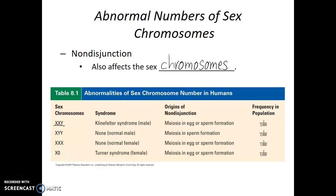Even more surprising, males who are XYY or females who are XXX have such subtle changes in phenotype that phenotypically they're normal — they wouldn't even know they have an abnormal number of sex chromosomes. Although there may be some fertility issues, because meiosis doesn't work as efficiently if an individual has an odd number of chromosomes.